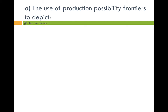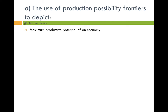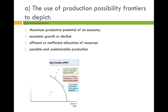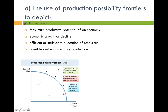Now looking at the use of production possibility frontiers to depict the maximum productive potential of an economy, economic growth or decline, efficient or inefficient allocation of resources, and possible versus unobtainable production. The PPF curve here shows that with all the different factors of production you have available, this is how many goods or services you can produce.